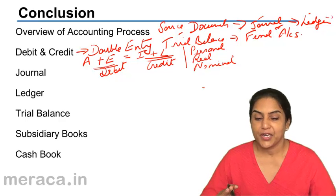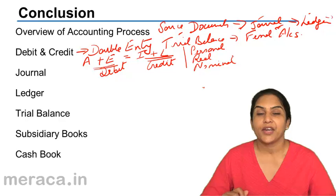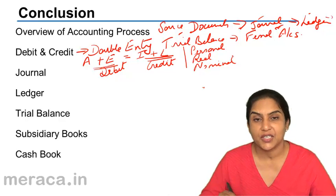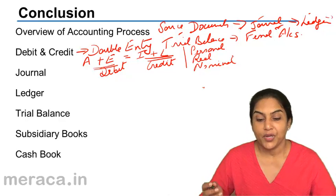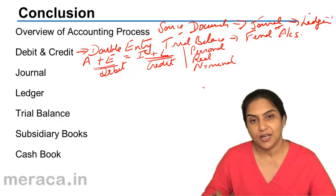After we knew debit and credit, we moved on to a journal. What was a journal? A journal is a book of original entry, wherein all transactions are first recorded, following the rules of debit and credit, in a chronological manner.